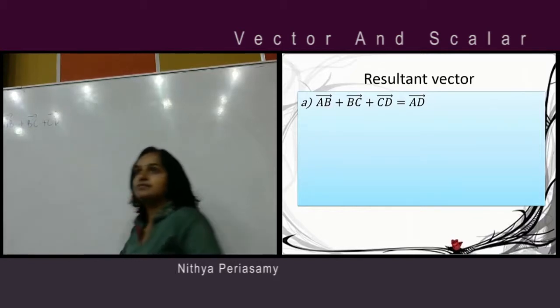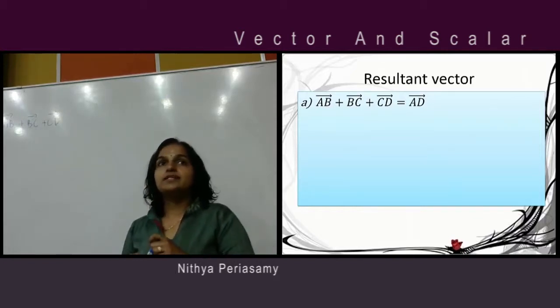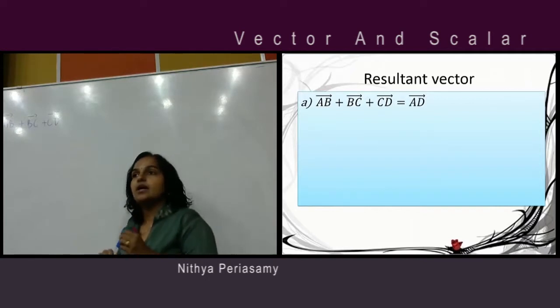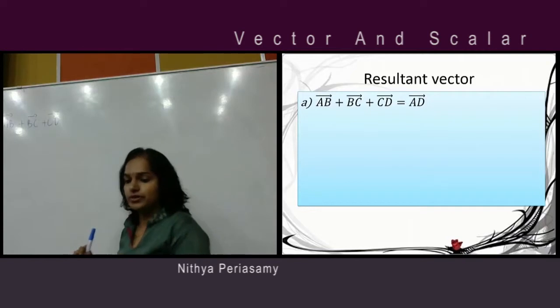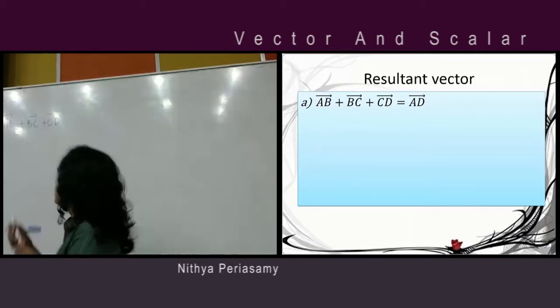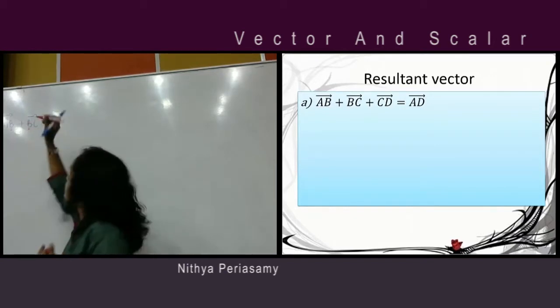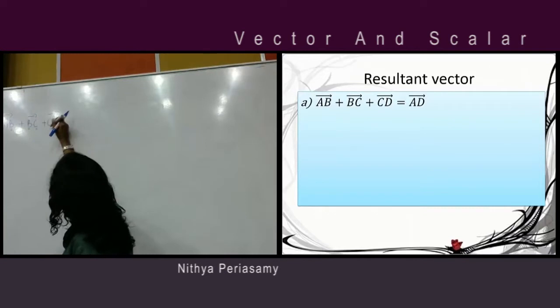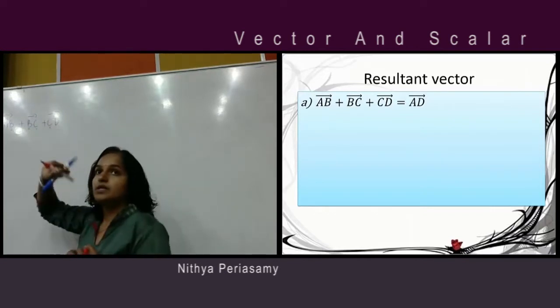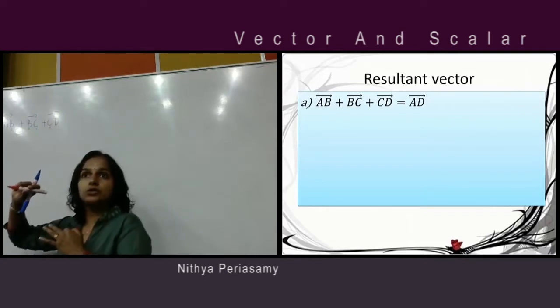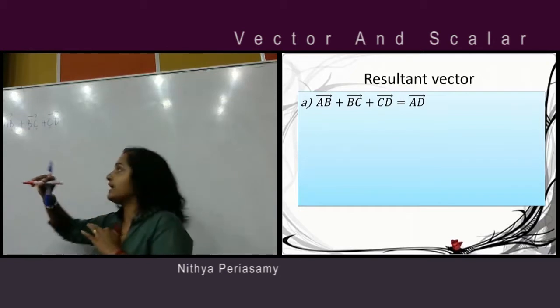Class, you know how to get this answer? Very simple. Resultant vector - what it means is addition. First you need to see the keyword. This alphabet must be same with this one, continuous. Next, C must be same with this one. So it means there's a continuity, then only you can do addition.